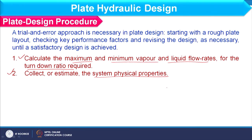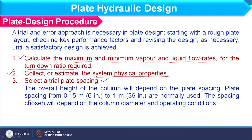We need to collect or estimate the system physical properties, and then decide the plate spacing — that is, the distance between two consecutive plates. We consider one trial value and in subsequent calculations we will fix that value; if a trial is required we can change this spacing. As far as plate spacing is concerned, it varies from 0.15 meter to 1 meter for normal use, and the spacing chosen will depend on the column diameter and operating conditions.